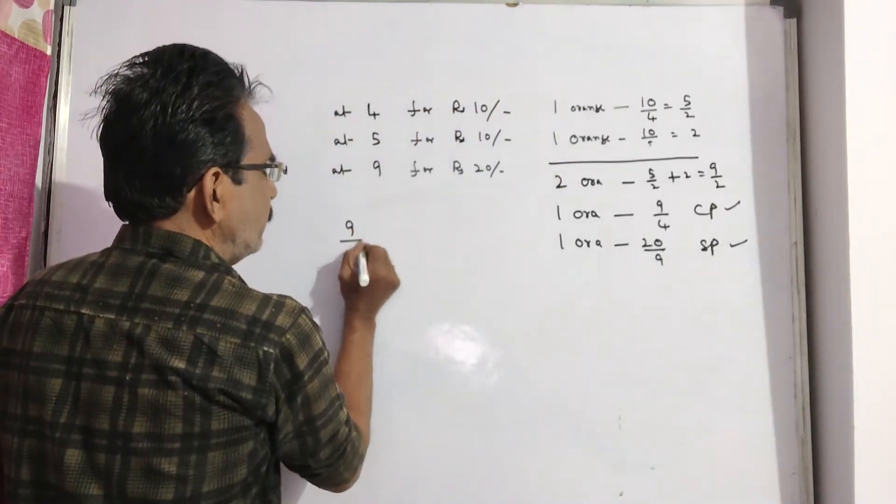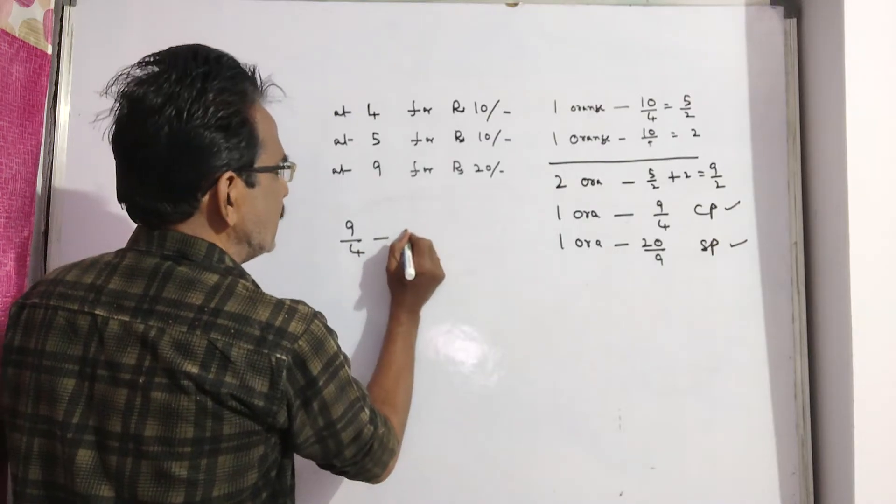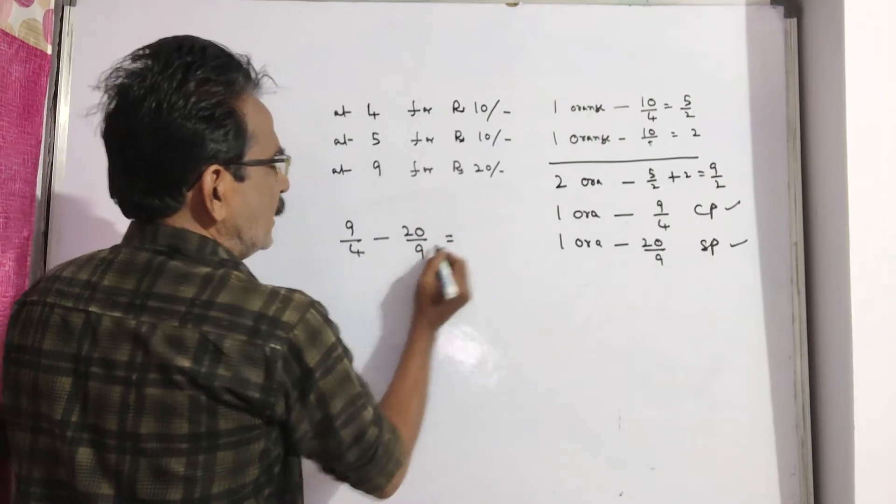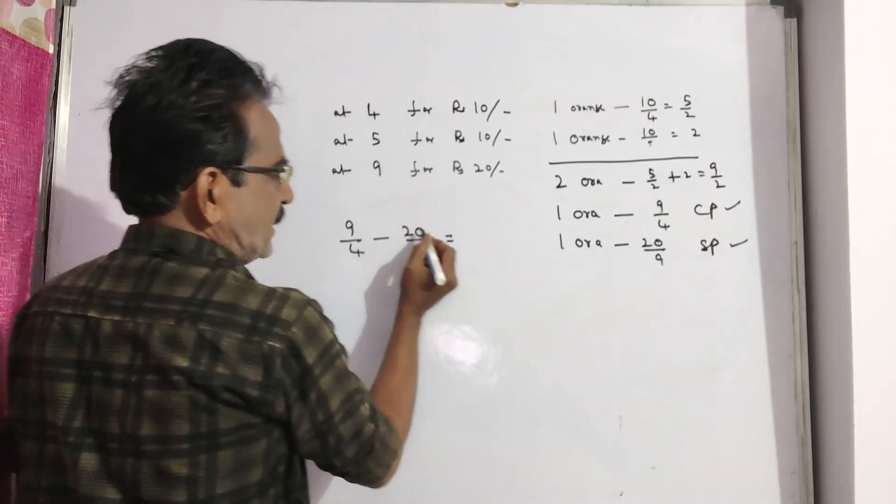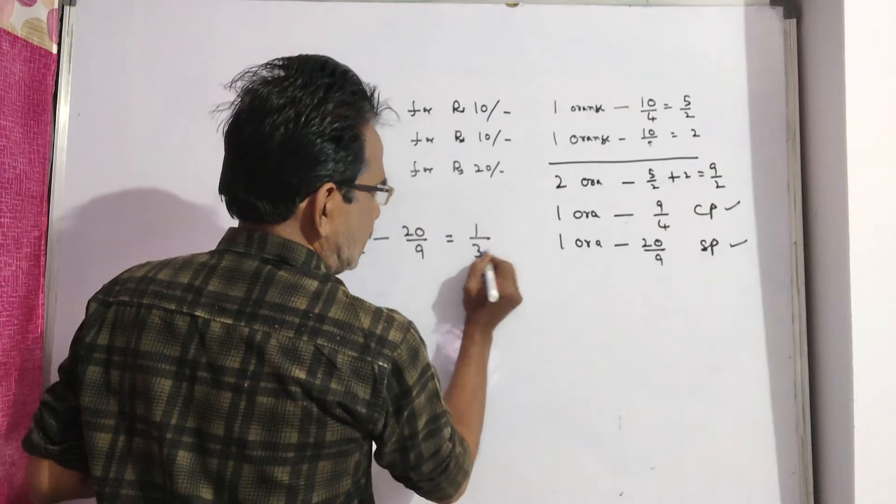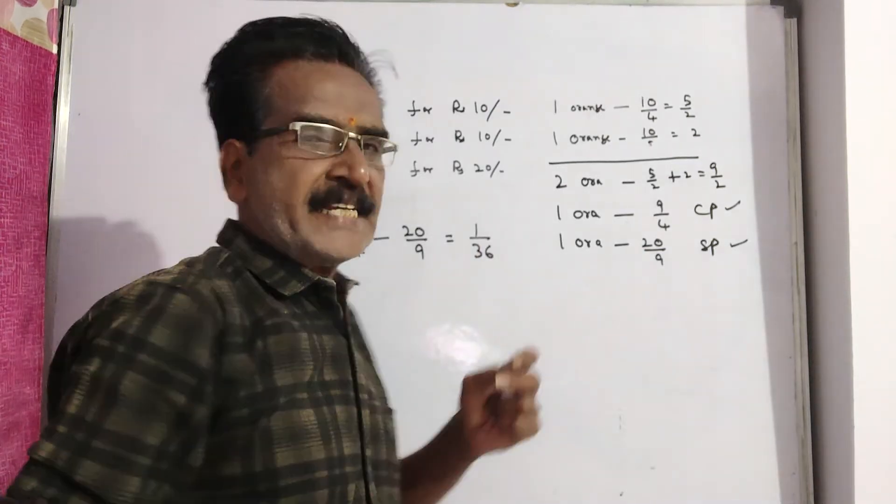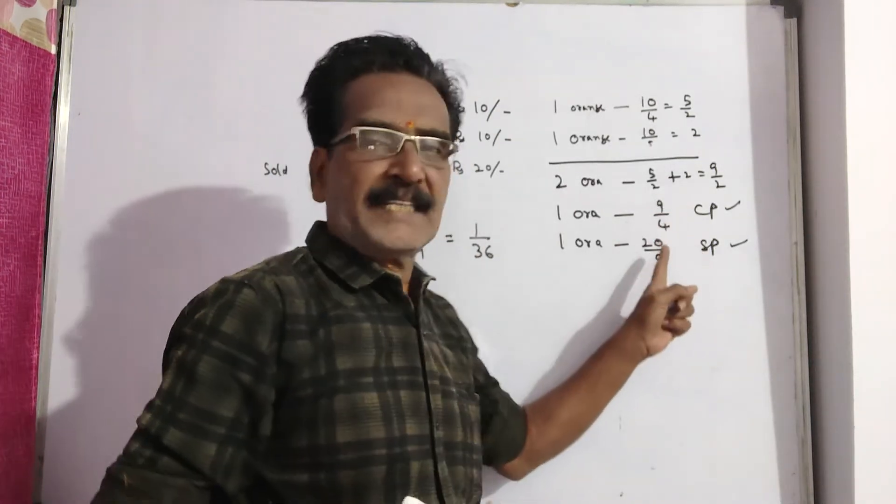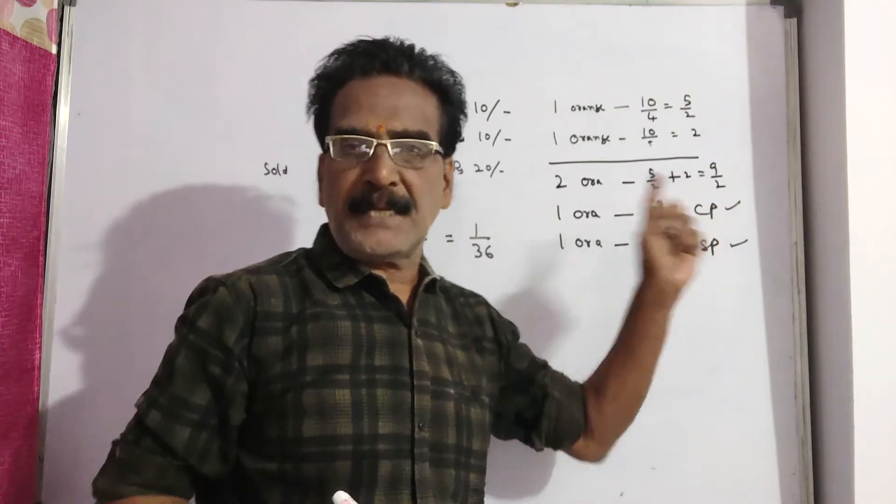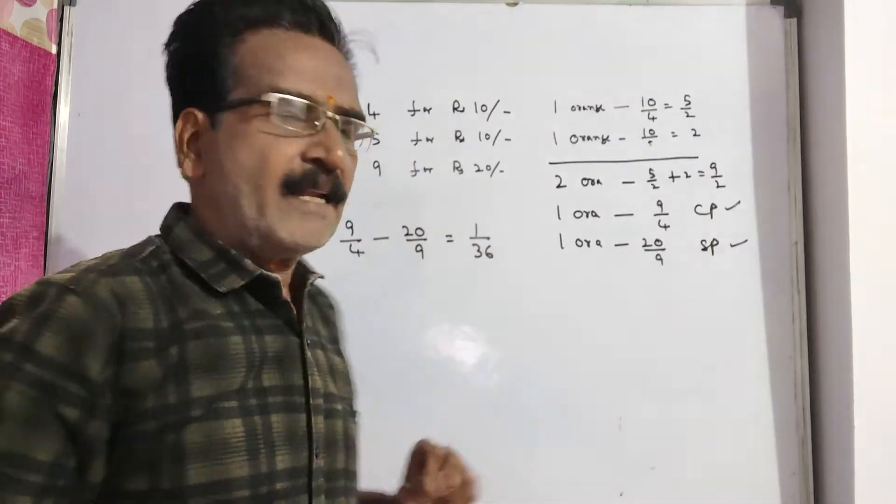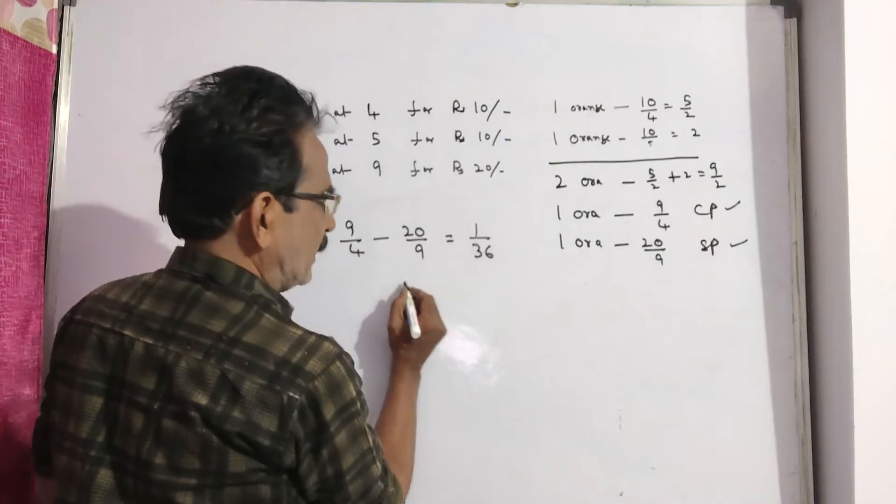See, 9 by 4 minus 20 by 9. 9 times 9 is 81 minus 80, 1 by 36. So in this transaction, he gets loss. 9 by 4 is greater than 20 by 9, so cost price is more. So loss is 1 by 36.